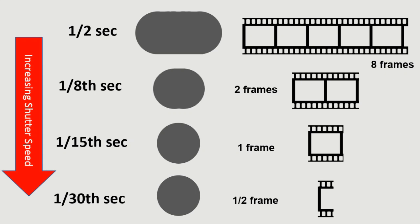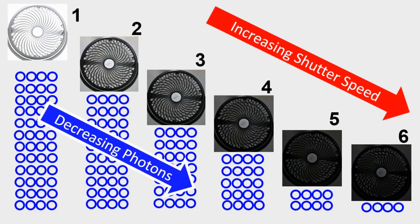So for example, if one frame had 8 photons, 2 frames would have 16. Or half a frame would only have 4. So lesser the photons, lesser the energy or brightness.